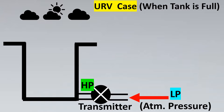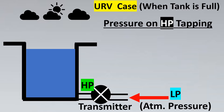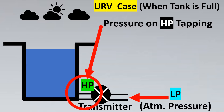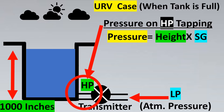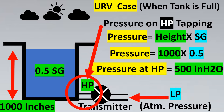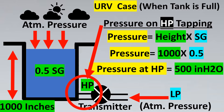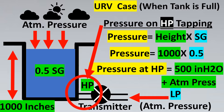Now let's look at the URV case when the tank is full. We need to calculate the pressure at the HP tapping using the equation: pressure = height × specific gravity. The C-to-C distance is 1000 inches and the specific gravity of the liquid is 0.5, giving 1000 × 0.5 = 500 inches of H2O. Since the tank is open, atmospheric pressure also acts on it, so the pressure at the HP side is 500 inches of H2O plus atmospheric pressure.